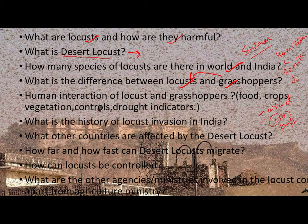The swarm moves in one particular direction decided by wind direction and wind speed. Generally, they cover 150 kilometers per day in the direction of the wind. Locusts interact with humans in small numbers — when grasshoppers are few, they are used as food and help in pollination too.